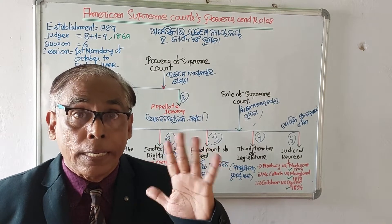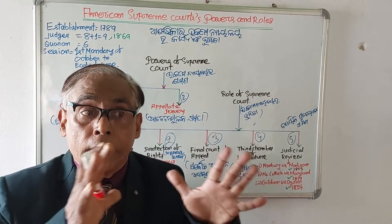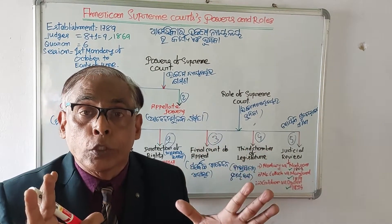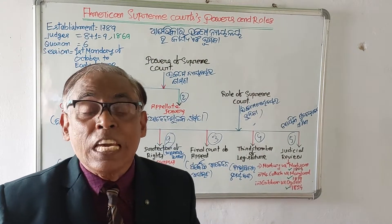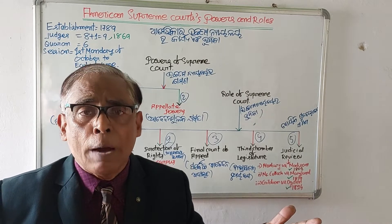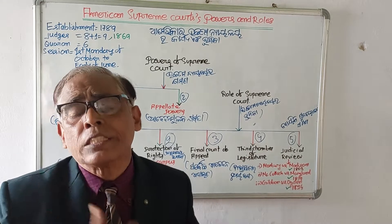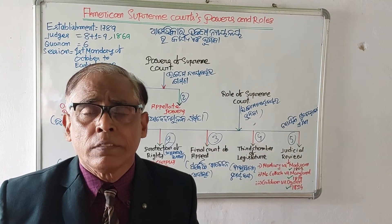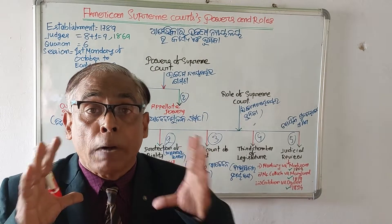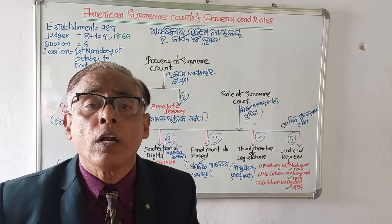Finally, the fifth role is Judicial Review. Judicial review means that whenever the American central legislature, Congress, makes any law, or the American executive takes any decision, these are verified by the American Supreme Court to determine whether they contradict the Constitution. If the Supreme Court finds that any act of Congress or any decision of the executive goes against the Constitution, it has the power to declare them null and void — ultra vires or invalid.